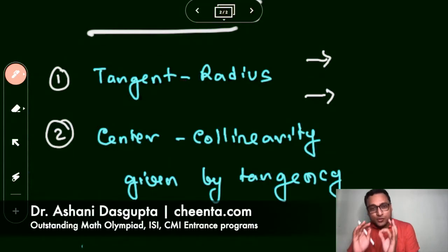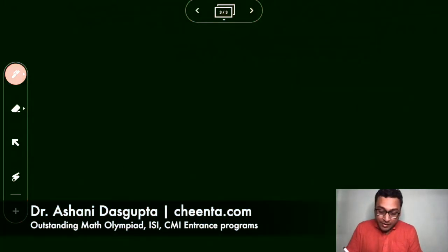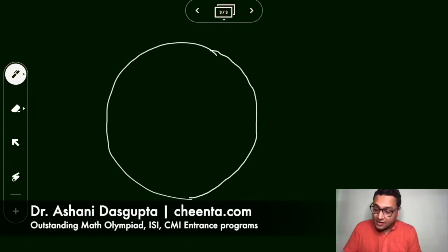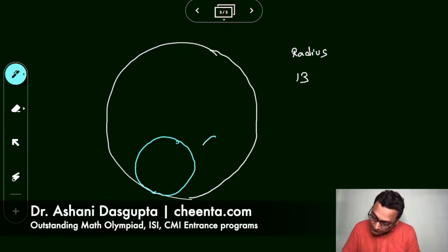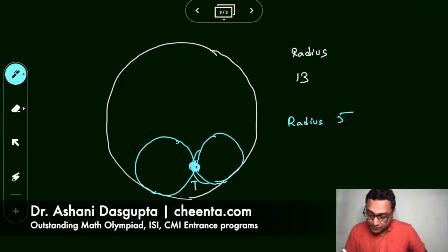Excellent. So we have both the facts cleared up: tangent radius and center collinearity property. Let's use them to solve the problem. It's a very simple problem, very beautiful problem from American Mathematics Competition. The problem is like this: you have a circle, the large circle of radius 13, and you have two small circles with radius 5, and they are tangent to each other at a particular point. So let's call this point T. The points, these two points of tangency are A and B, so the red circles are internally tangent to the large circle. So our goal is to find AB, the length of AB.